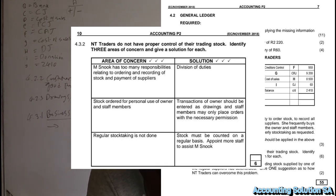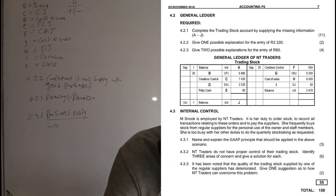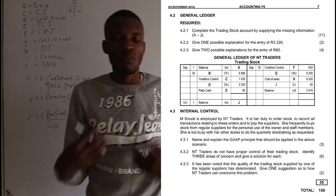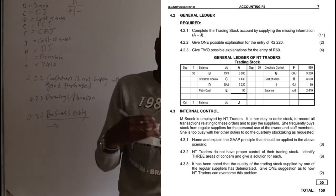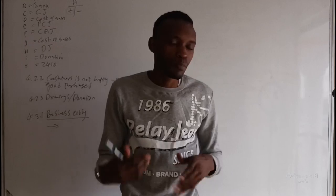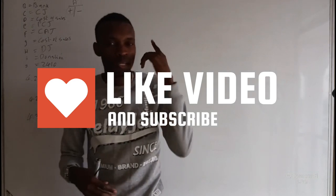The last question notes that the quality of trading stock from one of the regular suppliers has deteriorated. The suggestion is: if they are not happy with the supplier, they should first discuss the matter with the supplier, or find another supplier with better quality. I hope you enjoyed this video — please watch other videos on the playlist to learn different principles and master your examination.